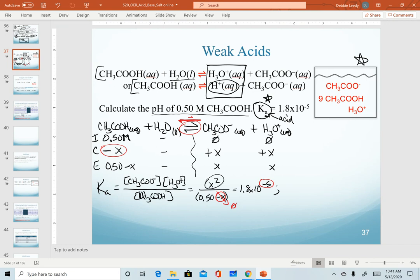And so then to solve for x, I'm going to multiply both sides by my 0.5 and then take the square root. So my solution for x is the product of my Ka times my initial concentration. And that will always be the case. So if you want to learn this setup for a weak acid, it's always going to be the product of Ka times our initial acid concentration.